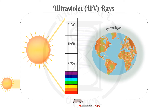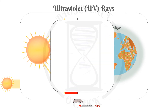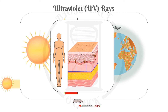UVC rays are the most harmful of the three, but we don't hear as much about them because luckily the ozone layer is able to absorb them. The ozone layer can only partially absorb UVB rays and only very few UVA rays. The UVB rays that do cross the ozone layer can penetrate the outer layer of our skin, the epidermis, while UVA rays can penetrate even deeper and reach the dermis.